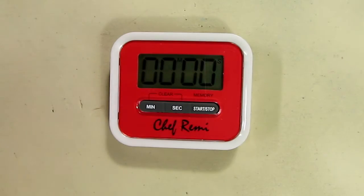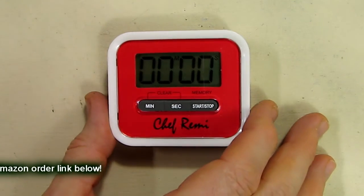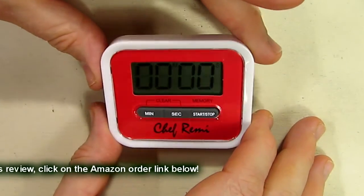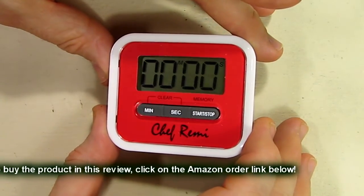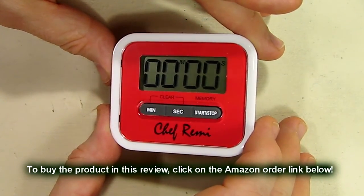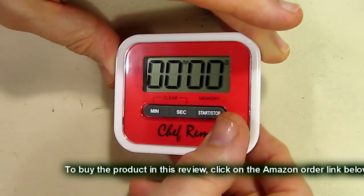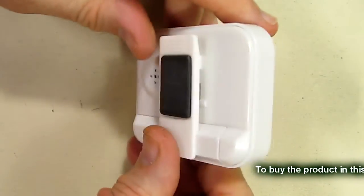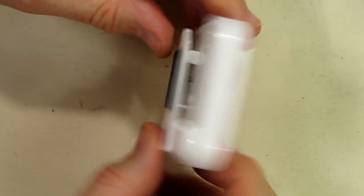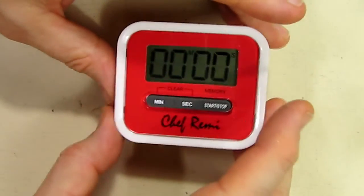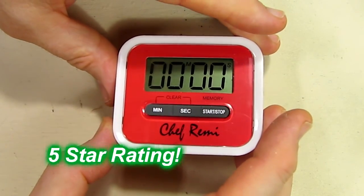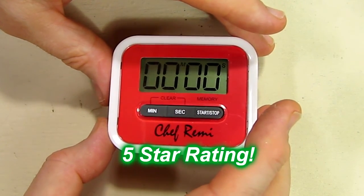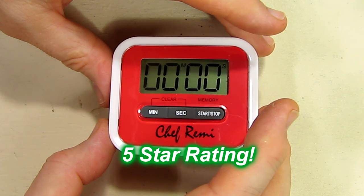So what's my overall opinion about the Chef Remy digital kitchen timer? I like this product. It's very nice looking. The red and cream colors, it's got a large display, it seems nicely sealed, the buttons are rubberized, the display is easy to read. I like the fact that it has a stand or a magnet. The count up feature is great. So I'm going to give this product a full five-star rating. I hope this video review helped you with your buying decisions. Thanks for watching.